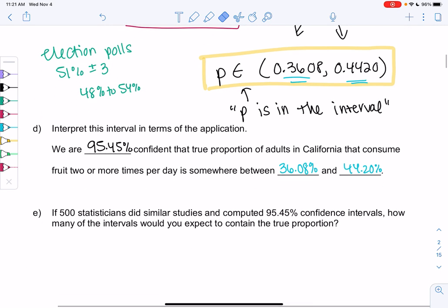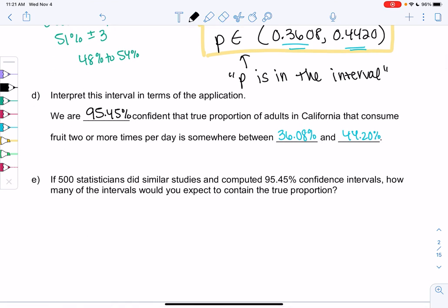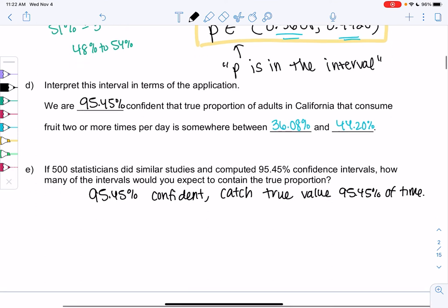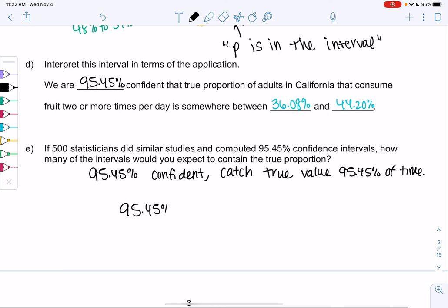Last thing is if 500 statisticians did a similar study, this is similar to election polls, because election polls are repeated over and over. And they all compute these 95.45% confidence intervals. How many of them would you expect to contain the true proportion? Unfortunately, stats is not 100% correct. It's just what's most likely. So for 95.45% confident, it really means we'll catch the true value that percent of the time. So if you only look at one election poll, there's a small chance it could be wrong. But if you look at lots of election polls, then you start to see a pattern.